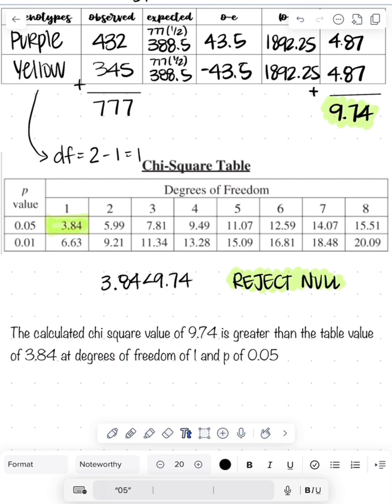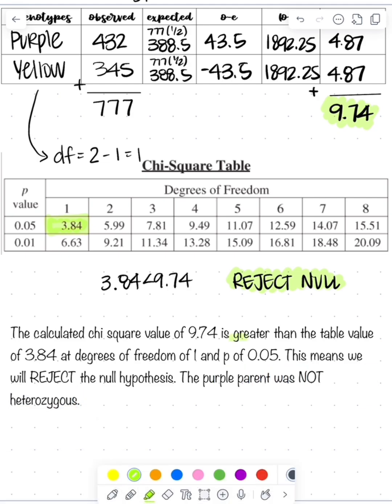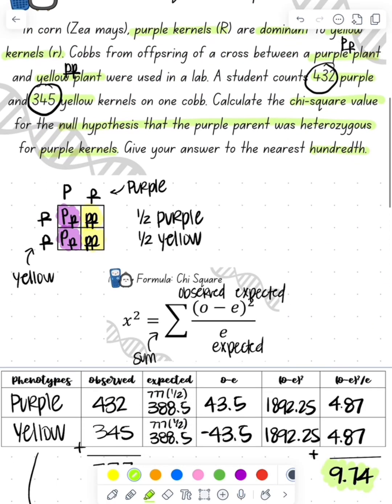We see that the calculated chi-square value of 9.74 is greater than the table value of 3.84. So we're going to reject our null hypothesis. The purple plant is not heterozygous.